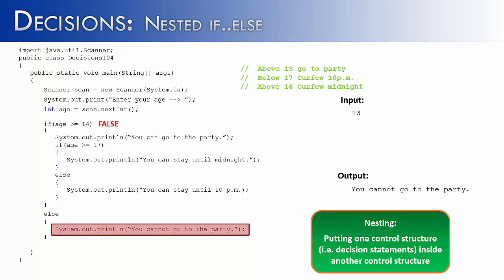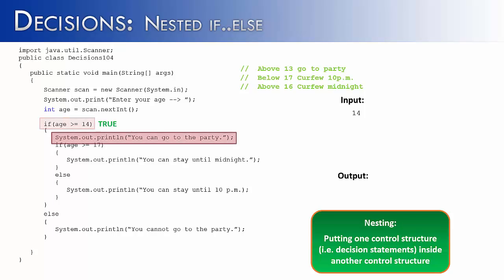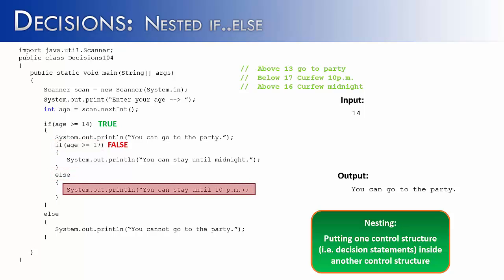Let's try 14. Is 14 greater than or equal to 14? Yes it is, so it would be true. It would print you can go to the party. Then we start the second part and check if your age is greater than or equal to 17. That's false, so it goes to the else statement and prints you can only stay until 10pm.